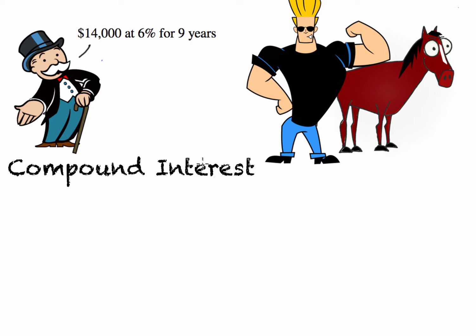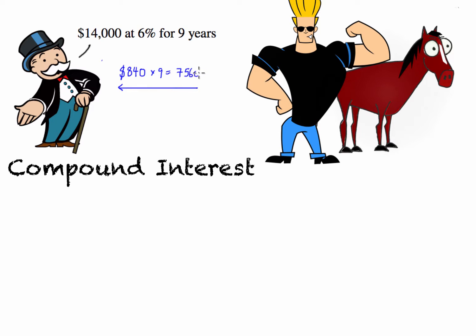The way that this differs from simple interest is that with simple interest, when we have a particular number at a percentage rate for a particular time, we give the person who borrows or invests the money 6% of the principal every year for nine years. So $14,000 — 6% of that is $840. With simple interest, we are just going to give $840 to the Monopoly man each year for nine years, and we end up paying $7,560 in interest.